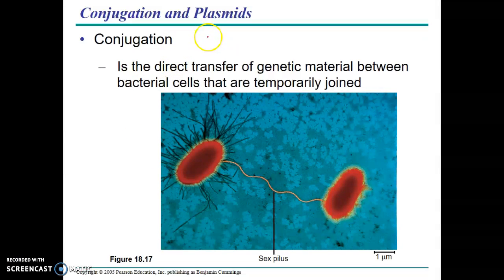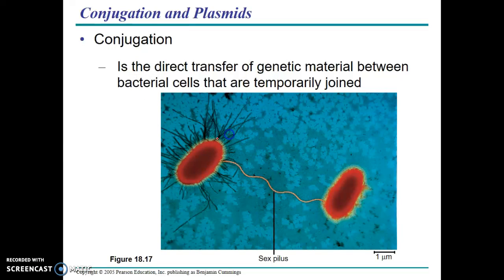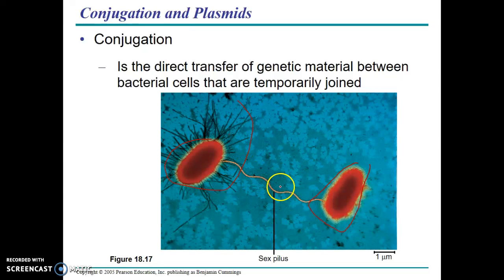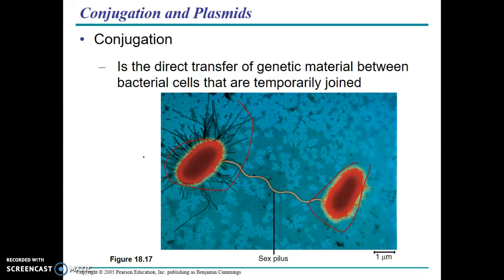The second way genetic recombination can occur is conjugation — when two bacteria directly exchange genetic material. Bacteria connect through something known as a sex pilus, and genetic material, usually plasmids, travels through the sex pilus. It usually gets replicated first, then travels into the other bacterium. This likely evolved because genetic diversity is a good thing for an organism, giving it the ability to adapt to changing conditions.